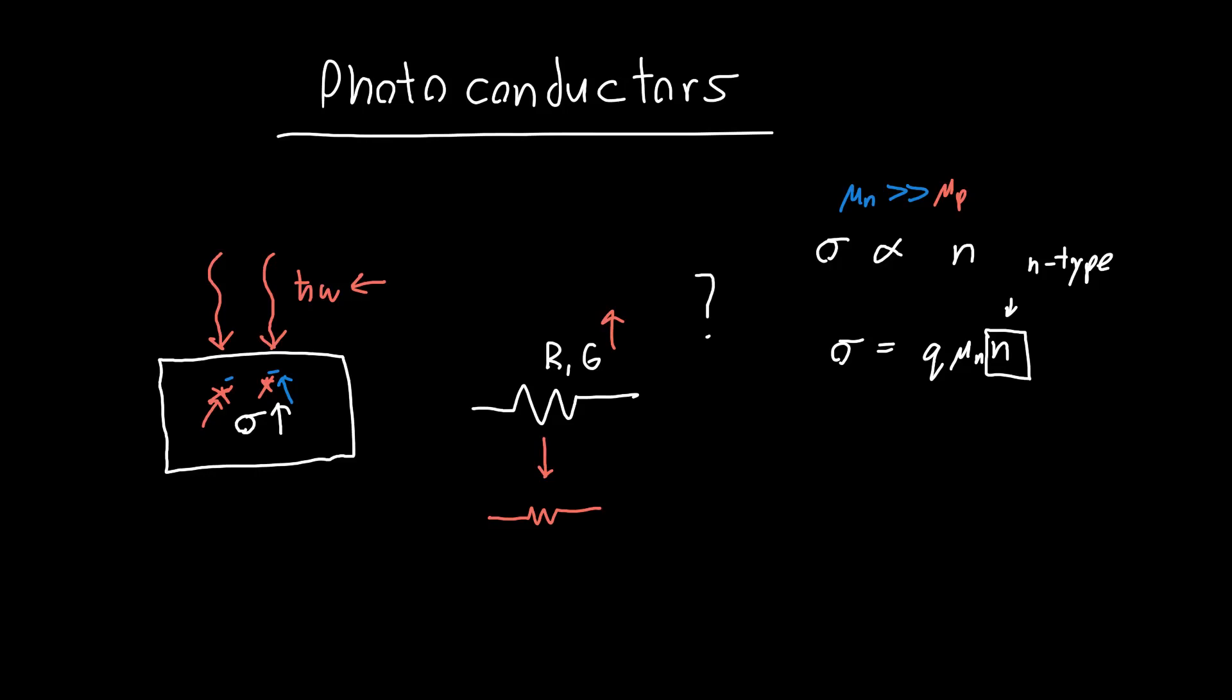So the question is, how much does this conductivity change? What is delta sigma? Well, it's just equal to Q mu_n times delta n. It's linear with the charge carrier density.